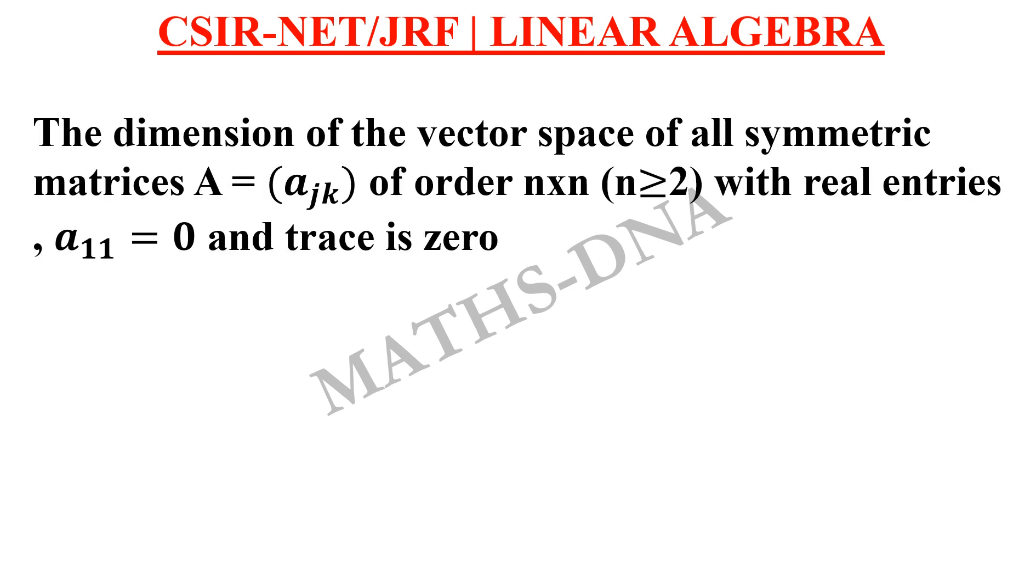The question is: the dimension of the vector space of all symmetric matrices A equals to a_jk of order n×n where n is greater than or equal to 2 with real entries and two conditions A11 equals to 0 and trace equals to 0.